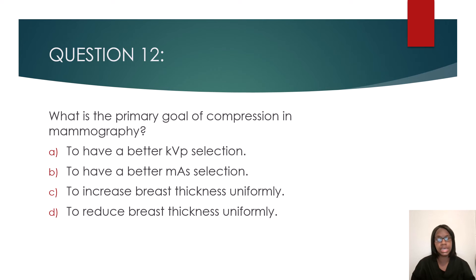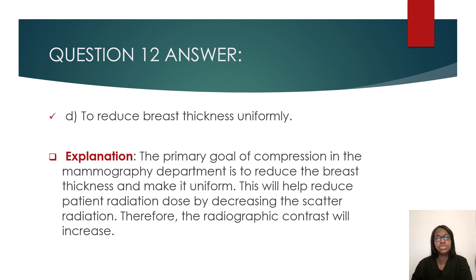Question twelve: what is the primary goal of compression in mammography — to have better KVP selection, better mAs selection, to increase breast thickness uniformly, or to reduce breast thickness uniformly? The answer is to reduce breast thickness uniformly. This also helps decrease patient radiation dose by reducing scattered radiation, and provides an image with greater contrast.